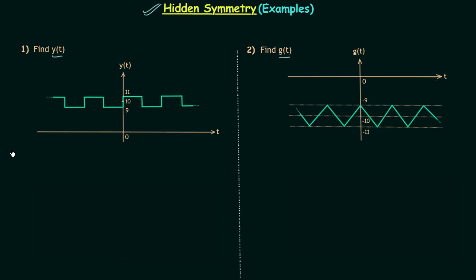In the first example we need to comment about the Fourier series expansion of signal yt when the waveform is given. In order to obtain the hidden symmetry we will focus on the given signal waveform. If you see the waveform of signal yt, it is very clear that we can obtain the half wave symmetry if we push this signal downward. So if we apply the downward amplitude shifting we can have the half wave symmetry, and let's say the half wave symmetric signal is represented by xt.